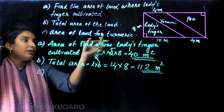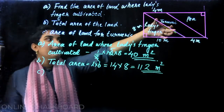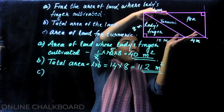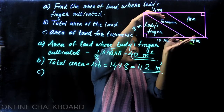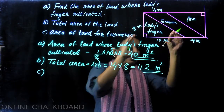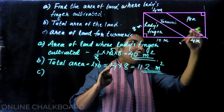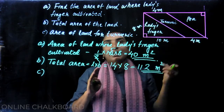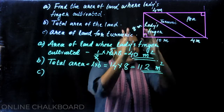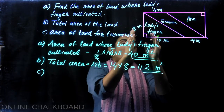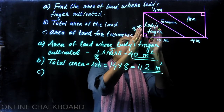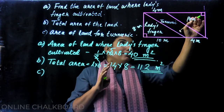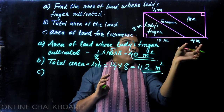The area of the land for tamarind — the middle portion of the land for tamarind. The area is 10 plus 4 is 14, and the other dimension is 10 and 8.